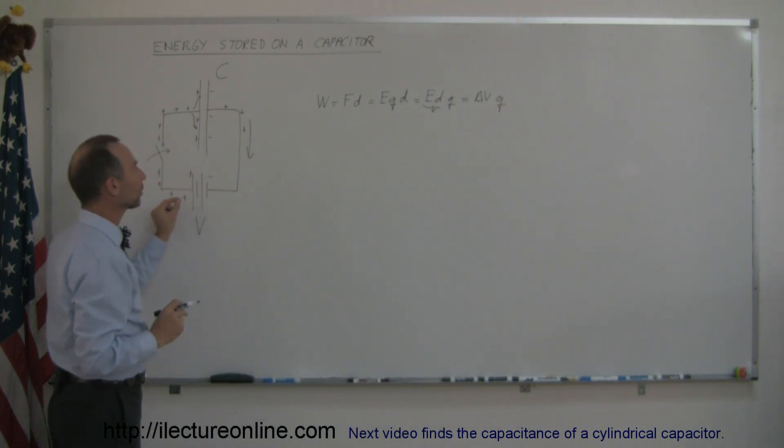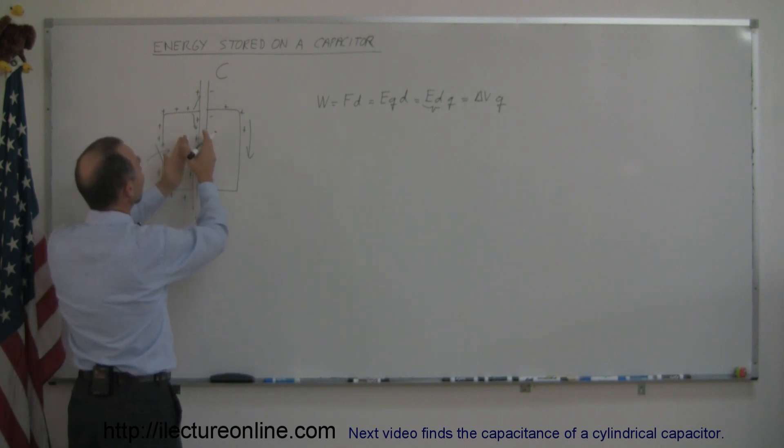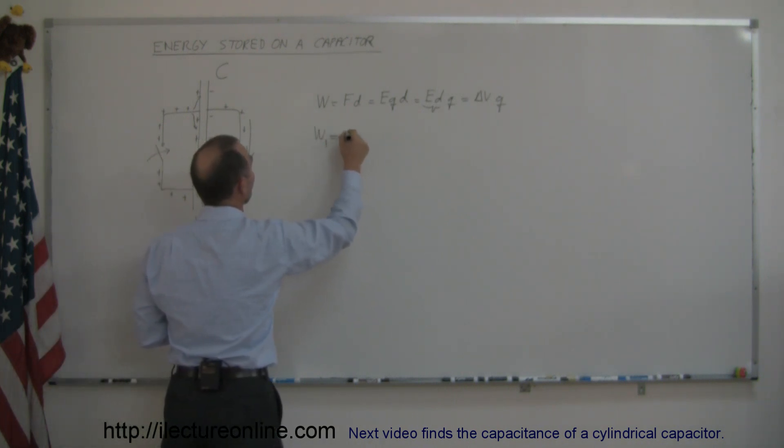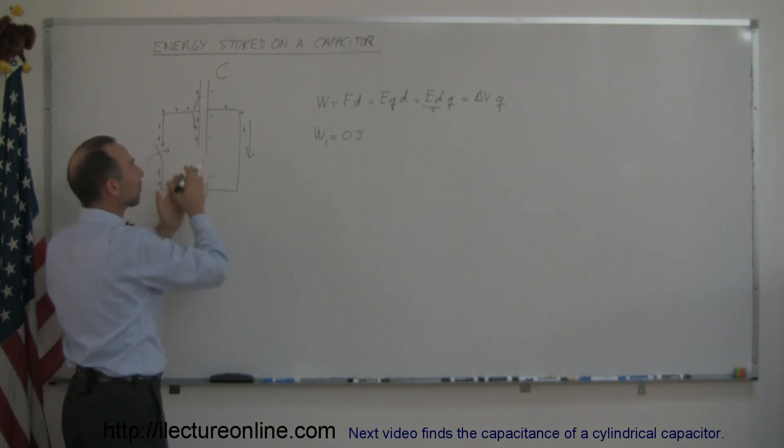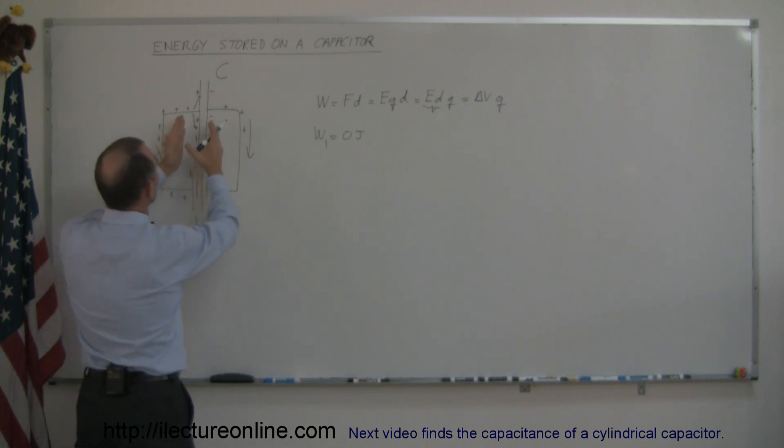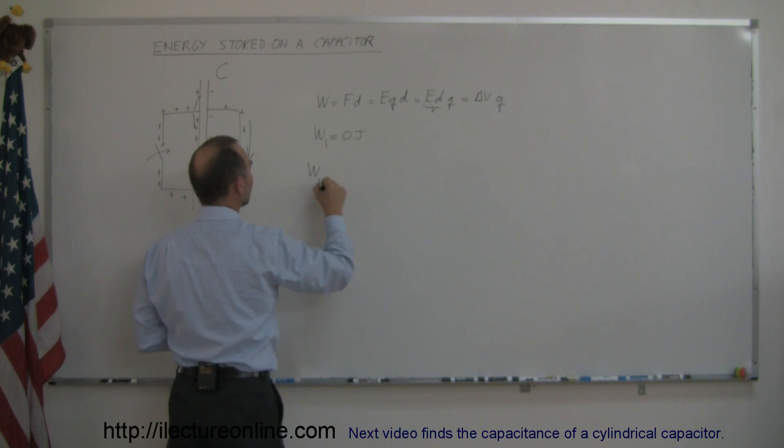So, the work done to put each charge on the capacitor plate equals the potential difference at that moment in time times the charge that you just placed there. So, you can imagine when you put the first charge there, and there's not yet any potential difference between the plates, to put the first charge there, it takes zero joules, it takes no work at all. But to put the last one there, when you place the last one there, the capacitor is already fully charged, and the potential difference across the plates is essentially the same as the potential difference across the battery equal to V. So, the work done to put the last one there is equal to the change in potential difference, or V times the charge on there.